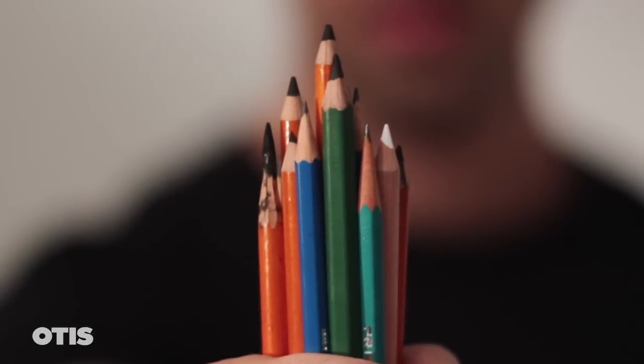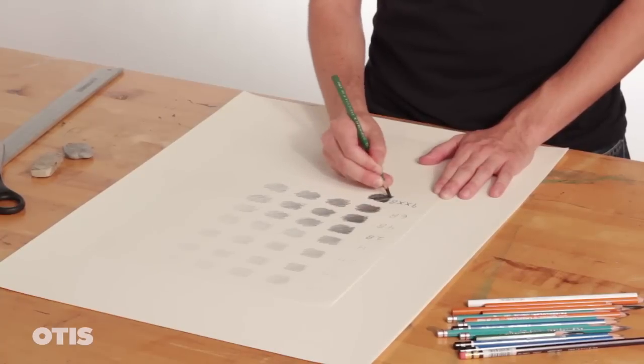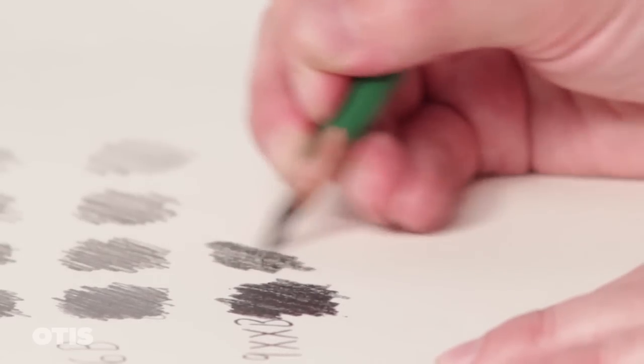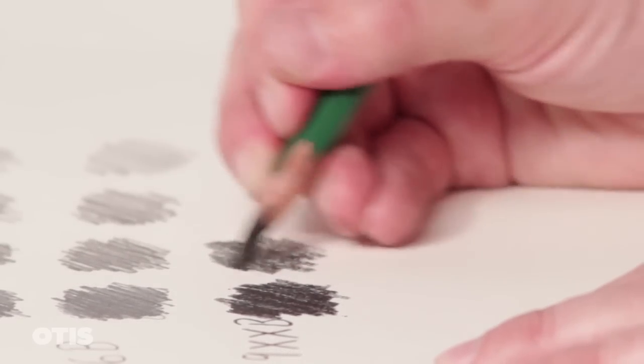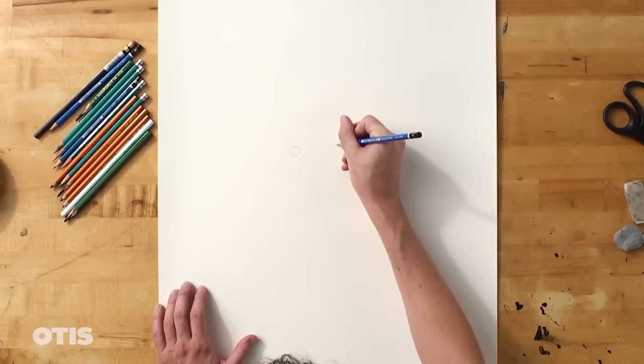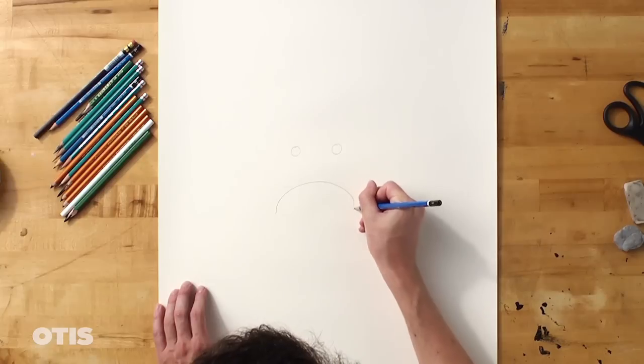We use both graphite and charcoal pencils. Charcoal tends to be much darker, softer, and some would say easier to blend, while graphite can be neater and less dusty. Note that they do not work well together.